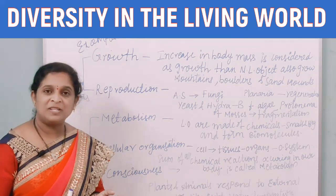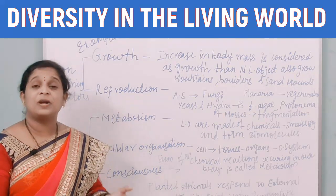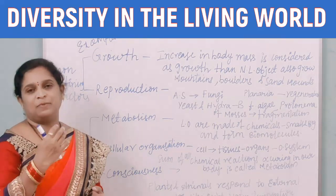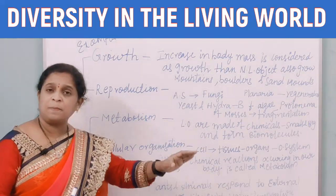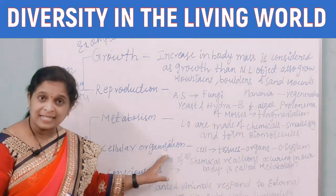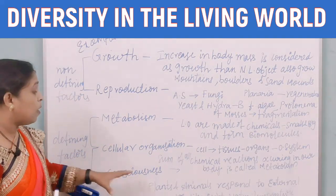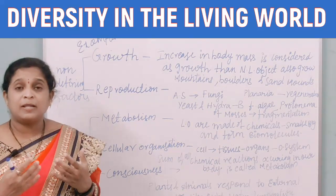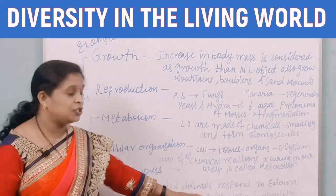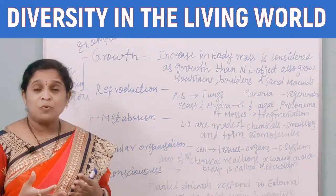Cellular organization means: the cell, which is the basic unit of life, combines to form tissues, tissues combine to form organs, organs combine to form organ systems, and then the organism is formed. This process takes place in all multicellular organisms, making it a defining factor. The next defining factor is consciousness — plants and animals exhibit reactions towards factors like light, water, and temperature. For example, a sunflower shows a stimuli response towards sunlight.